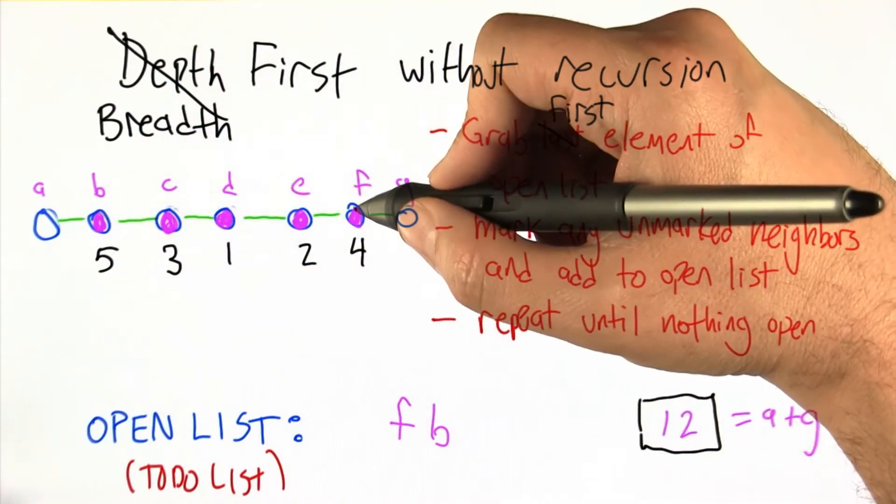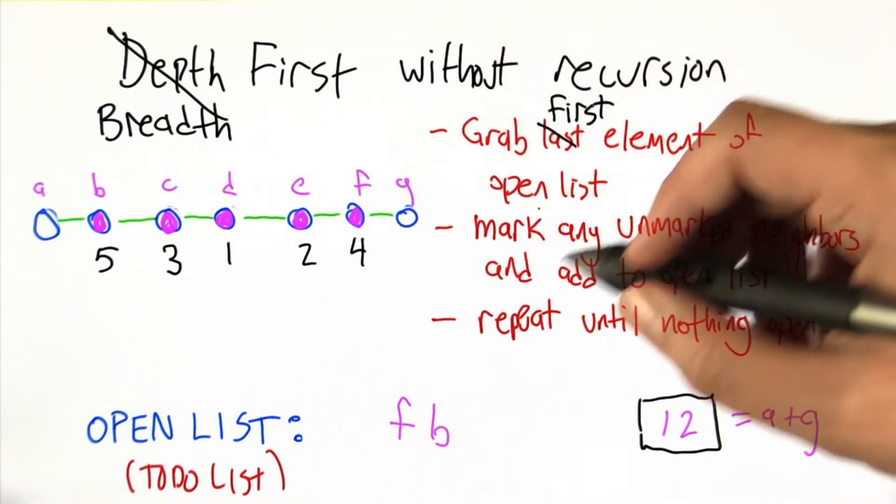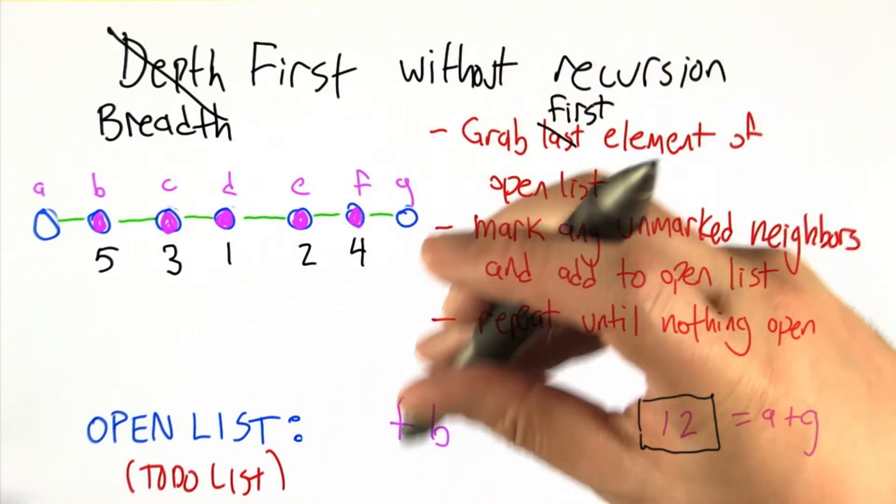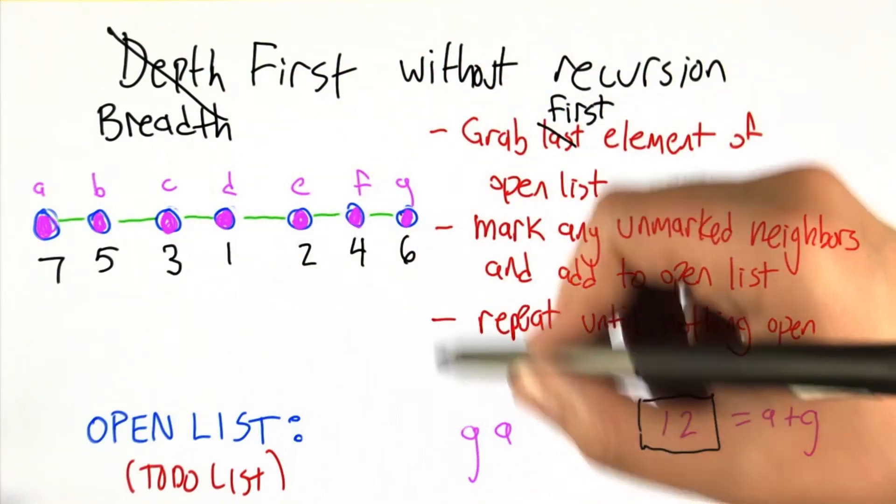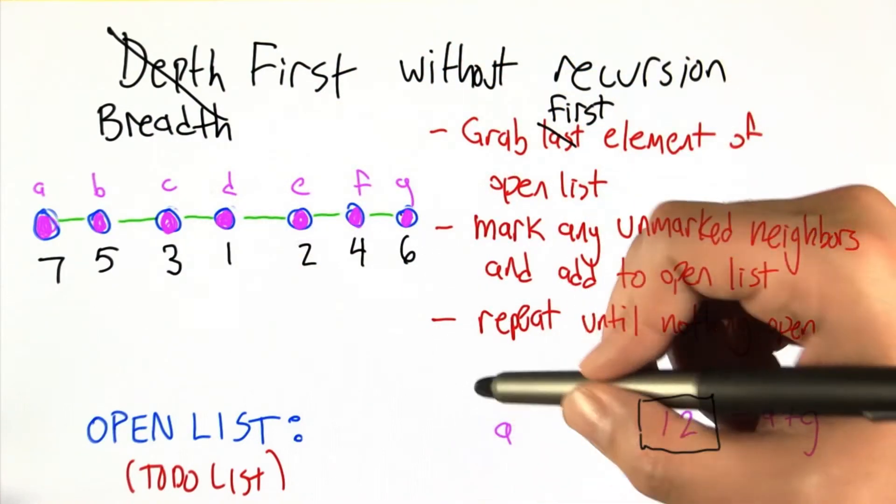And now what happens next is we expand from F. We've expanded G, added it to the end of the list. But now before we touch G, we're always pulling off the front of the list now. We get to B. Now we visited everything.